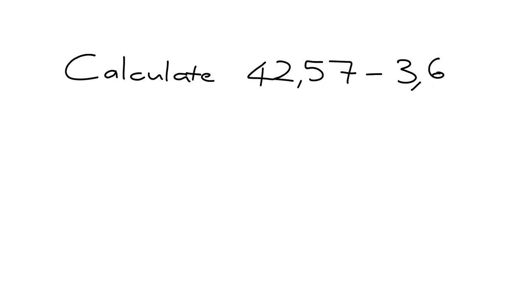The easiest way to do that is just to make sure you line up the commas. For example, if I put 42,57 like this, when I put the 3,6, I must make sure that the commas lie exactly underneath each other. And then everything else will be lying in the correct place.